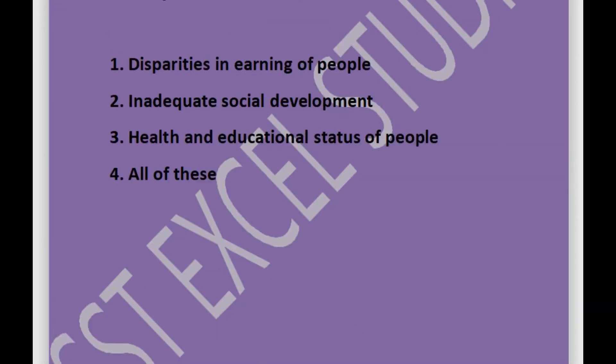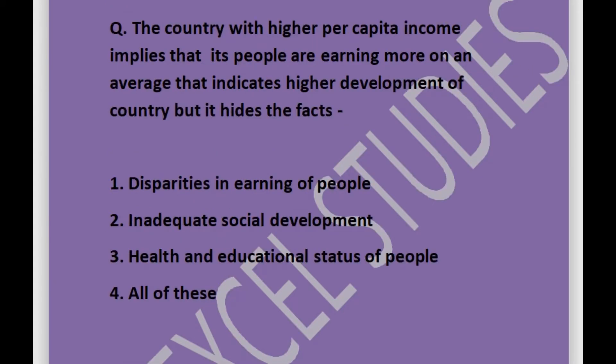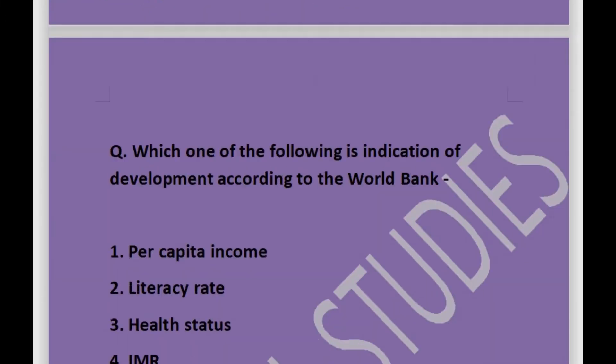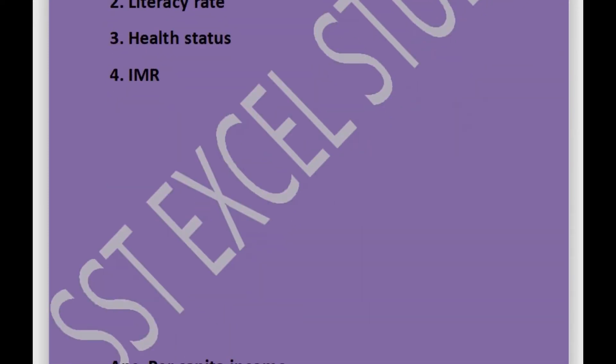Per capita income hides the facts of disparities in earning of people, inadequate social development, and health and educational status of people. Next question: which one of the following is an indication of development according to the World Bank? Options are per capita income, literacy rate, health status, or IMR. Answer is per capita income.